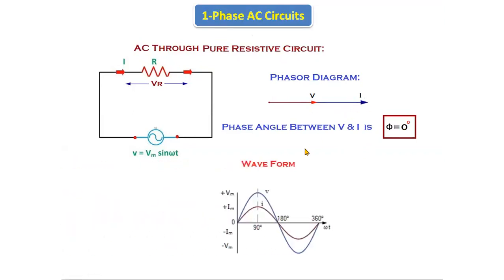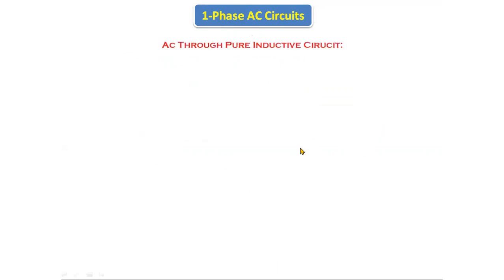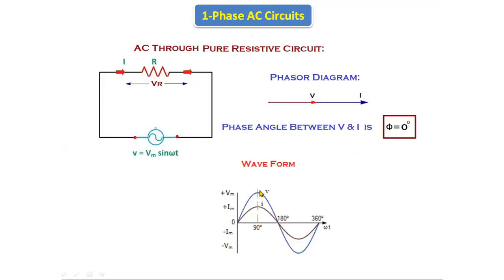If you see the waveform, this is the voltage waveform and this is the current waveform. Both waveforms are starting from zero position only — there is no phase difference between voltage and current. The positive half cycle is ending at 180 degrees for both the voltage waveform and the current waveform.